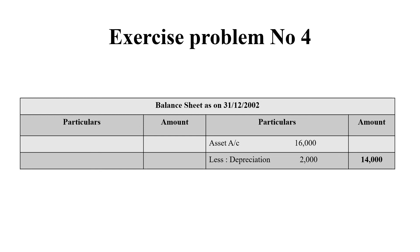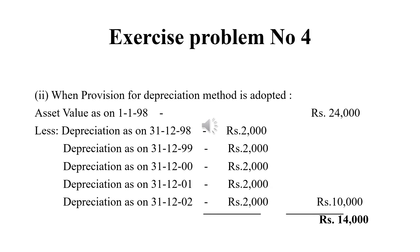Next, in the case where provision for depreciation is maintained — if we are maintaining a provision for depreciation account, we do not have to calculate it year by year. The asset was purchased in 1998, and the current value as on 2002 is available. We directly take the total depreciation, which is called accumulated depreciation. If you accumulate it, the total depreciation is Rs. 10,000. So, 24,000 minus 10,000 gives us Rs. 14,000. This is how we calculate when the provision for depreciation is maintained.